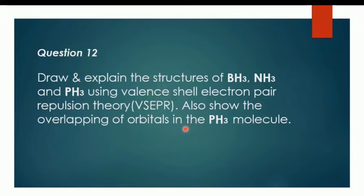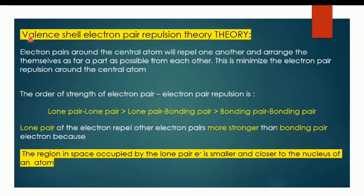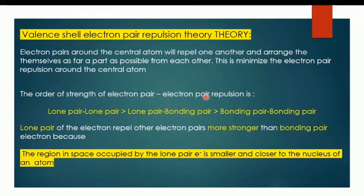So we have two questions here. Before that, we must explain the valence shell electron pair repulsion theory. Electron pairs around the central atom will repel one another and arrange themselves as far apart as possible from each other. This minimizes the electron pair repulsion around the central atom. The order of electronic repulsion is: lone pair–lone pair is stronger than lone pair–bonding pair, which is stronger than bonding pair–bonding pair, because the region in space occupied by the lone pair electrons is smaller and closer to the nucleus of an atom.